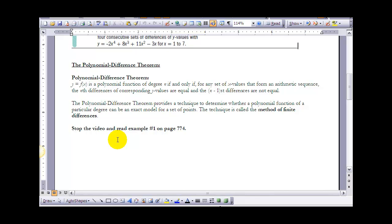So it provides a technique to determine whether a polynomial function of a particular degree can be an exact model for a set of points. The technique is called the method of finite differences. So at this time if you could just stop the video and read example 1 on page 774 before moving on in the video.